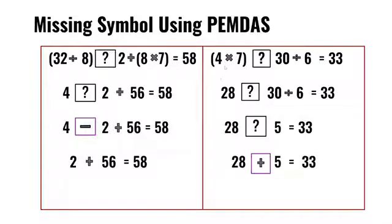We do what's inside the parentheses. 4 times 7 is 28. We're going to do it from left to right. We do 30 divided by 6, which is 5. We all know 28 plus 5 is 33. So plus is the missing symbol.